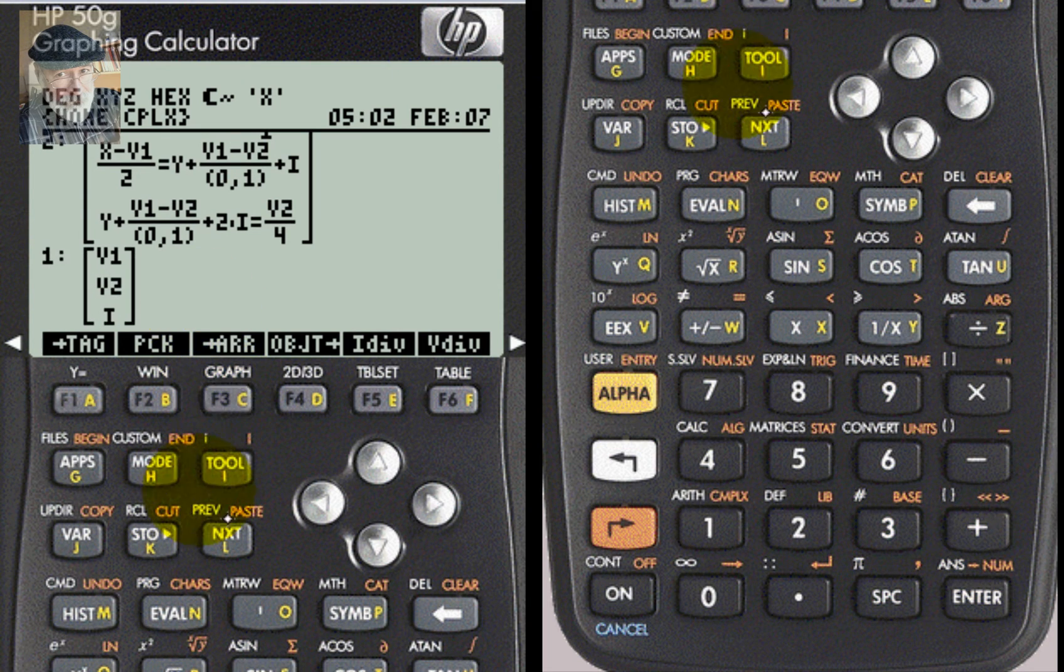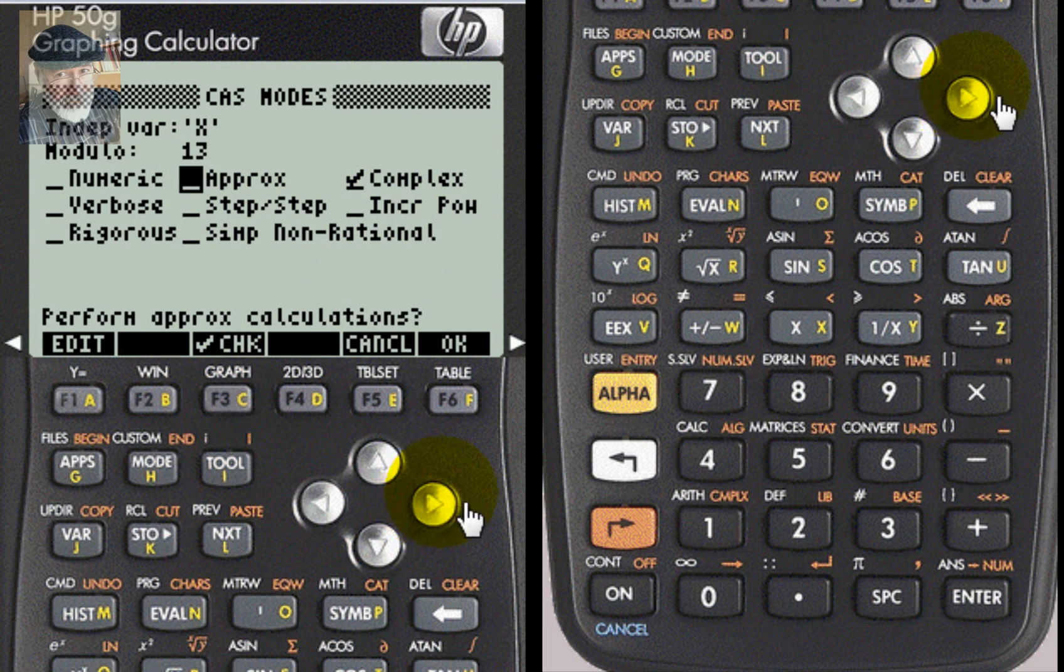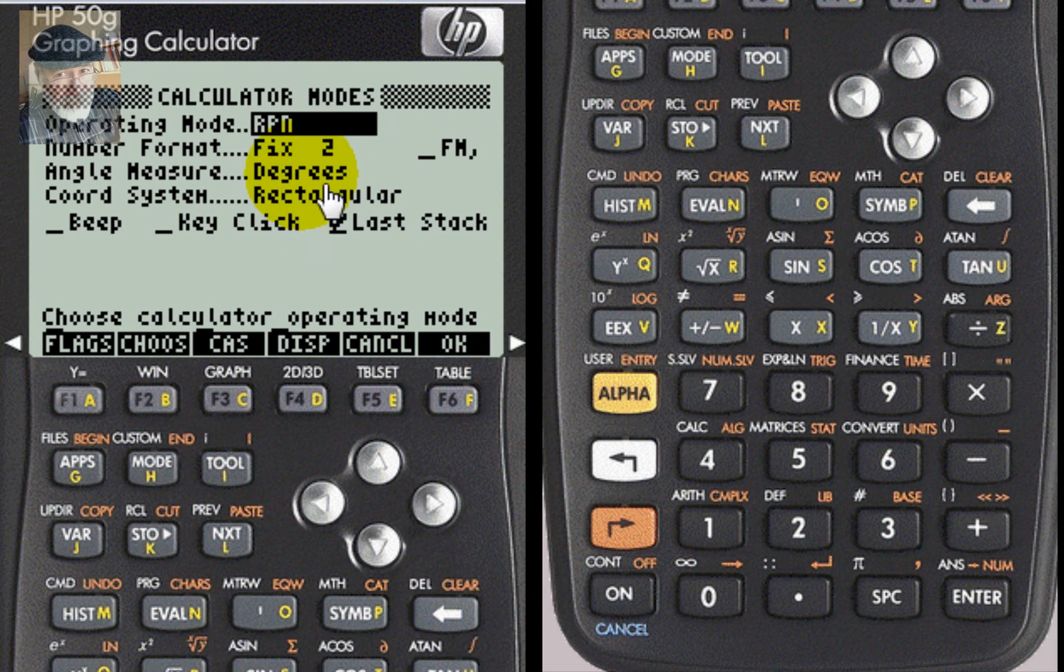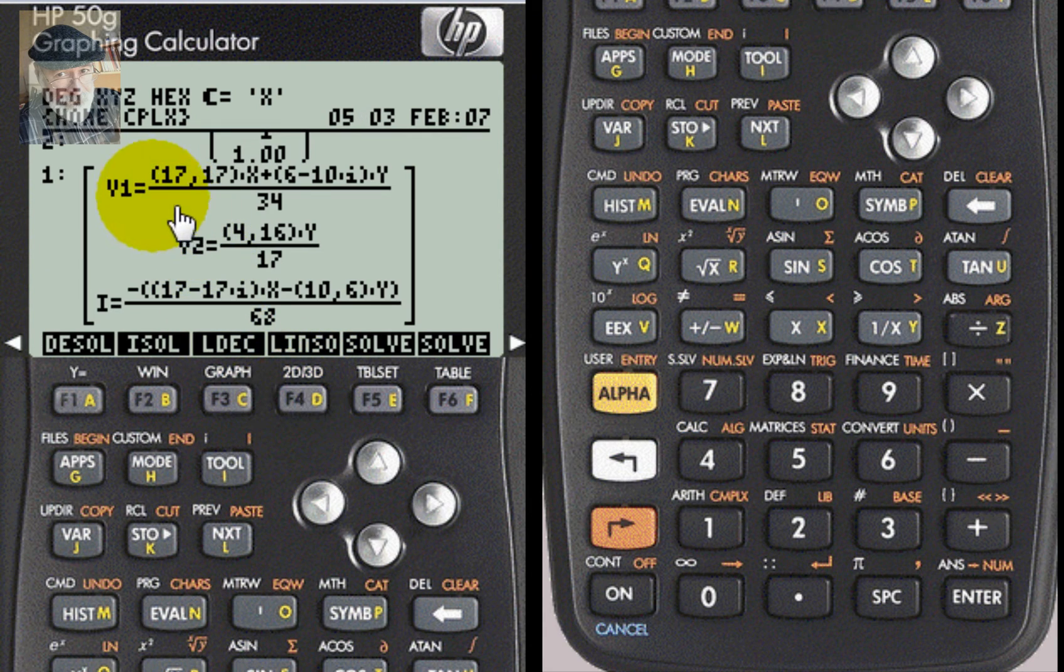But we don't go there before going to the mode, CAS, and make sure all those radio buttons are cleared. And also, that the calculator is in degrees and in rectangular form. Now we go to the symbolic solver, linear solutions, and there are v1, v2, and i, as functions of x and y.